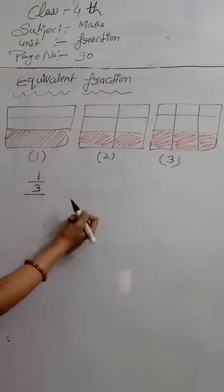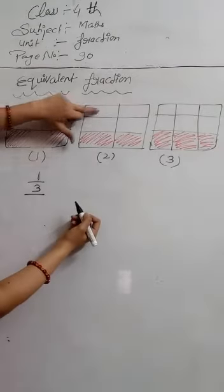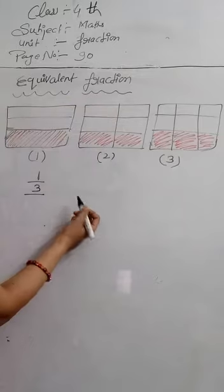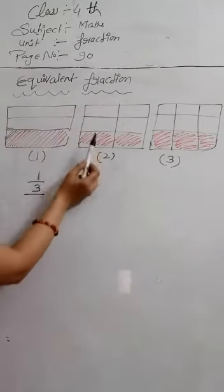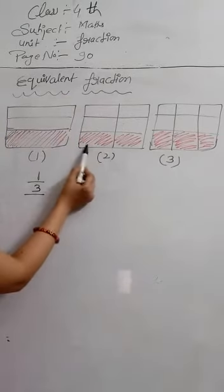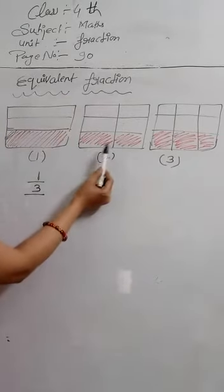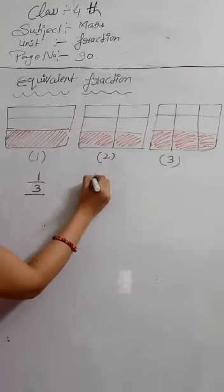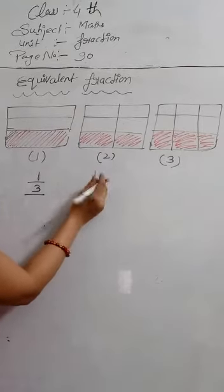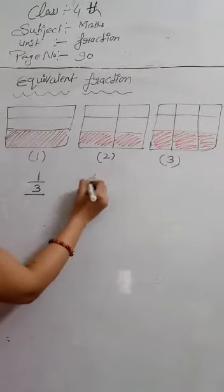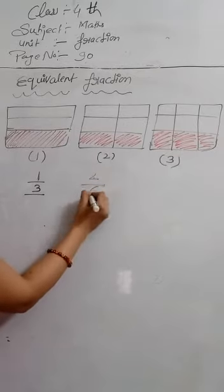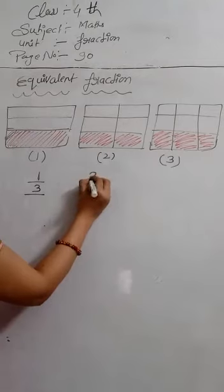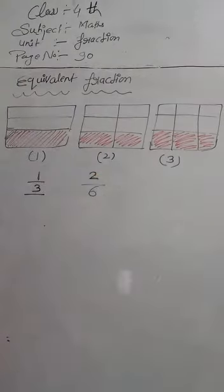Now, here we can see one, two, three, four, five, six. Six equal parts are there and two parts are shaded. So, we will write here. Our fraction will be two by six.